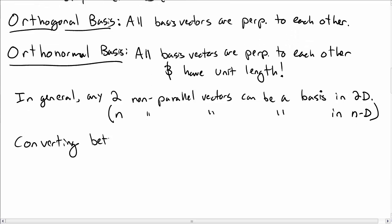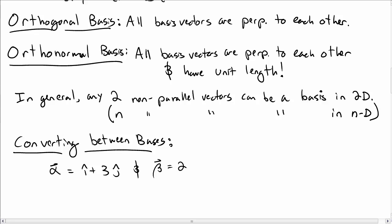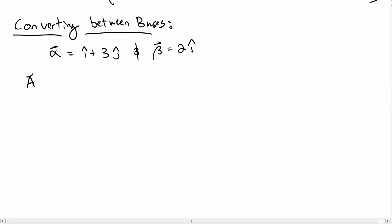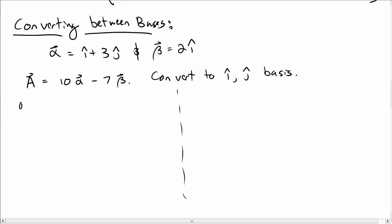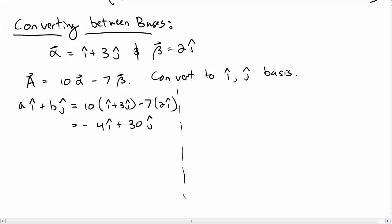Let's talk about how to convert from one basis to another. Using the alpha and beta vectors from before, consider vector a = 10 alpha minus 7 beta, and I want to convert this to the i-hat/j-hat basis. One way: it must be some a i-hat plus b j-hat. Expanding, 10 times alpha written in i-hat/j-hat minus 7 times beta in i-hat/j-hat, and multiplying out gives a = minus 4 and b = 30.